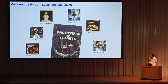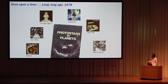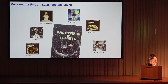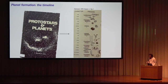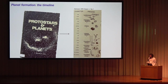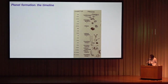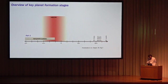1978 — it's the time of Grease, the Star Wars Christmas Special, the invention of the Lego figure. You could watch Superman on a laser disc while eating the very first Ben & Jerry's ice creams. It's also the time of the very first Protostars and Planets book. The very first chapter is about planet formation and includes a diagram going from very small scales all the way to the scales of planets. How much of this figure survives to this day?